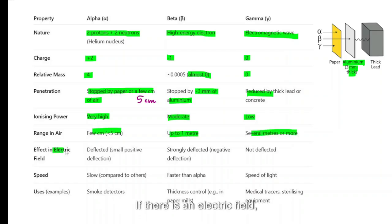If there's an electric field, the alpha particles will change the direction because it has a charge, plus two. Beta radiation also changes direction because it has a charge, negative one. But gamma radiation has no charge, so it will just not bend. It will go straight through.